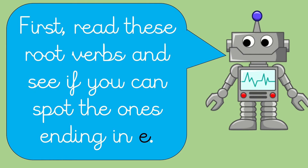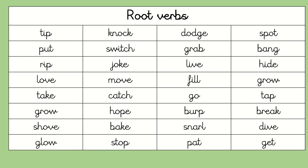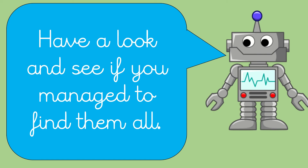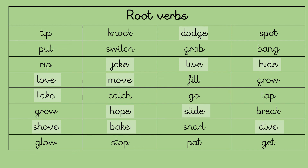First, read these root verbs and see if you can spot the ones ending in E. Have a look at the root verbs — see if you can spot them. There are 12 of them. Pause your video now. Great, well done — you should have found all 12 of those root verbs ending with an E. Have a look and see if you managed to find them all.